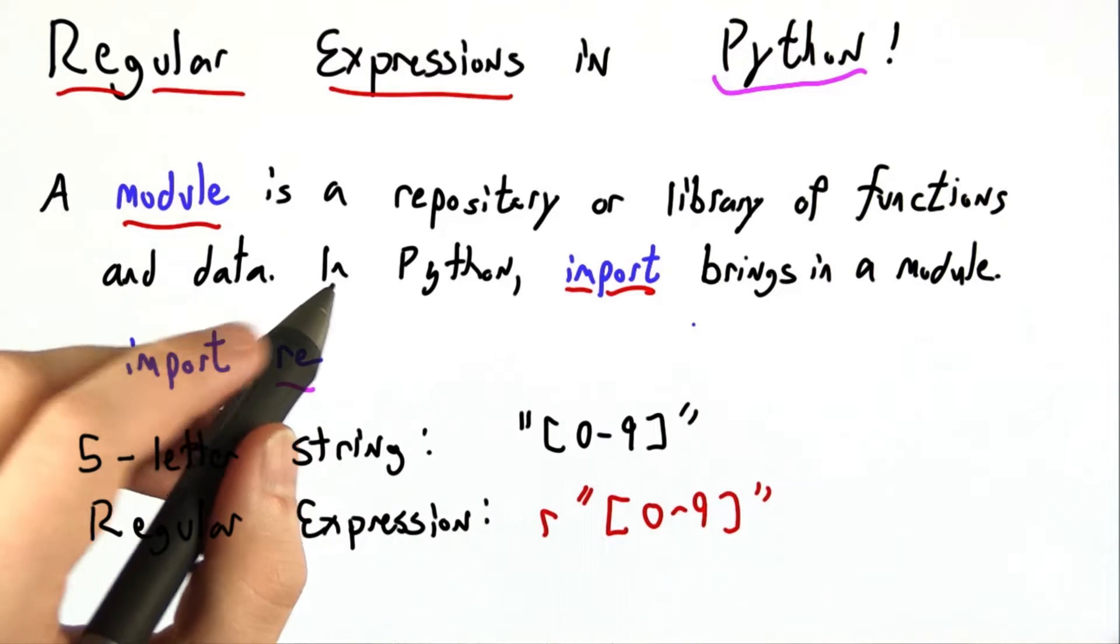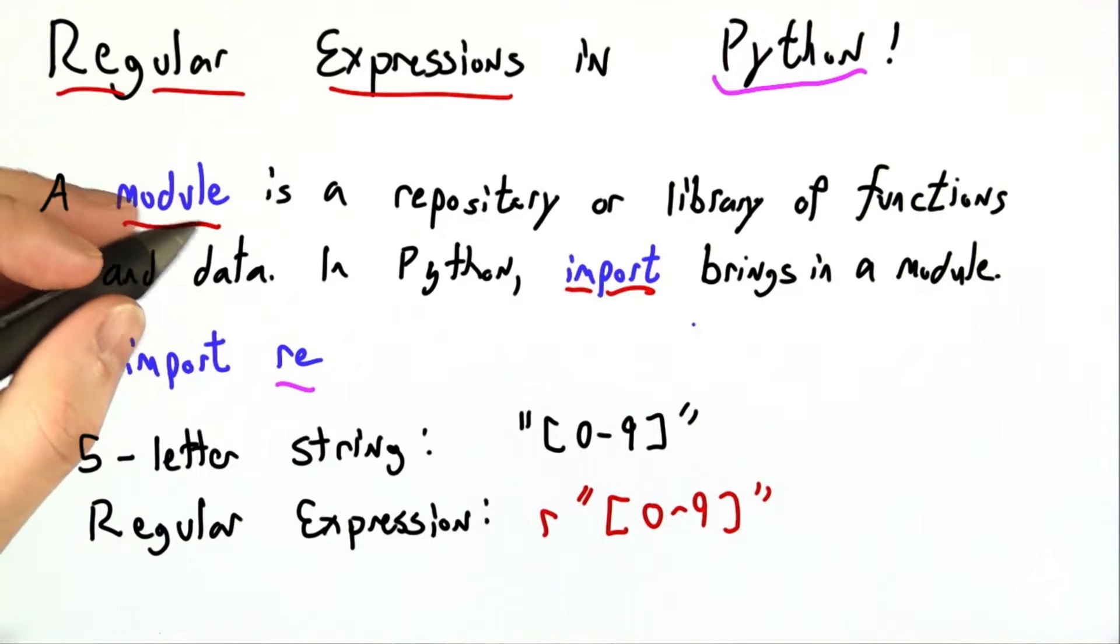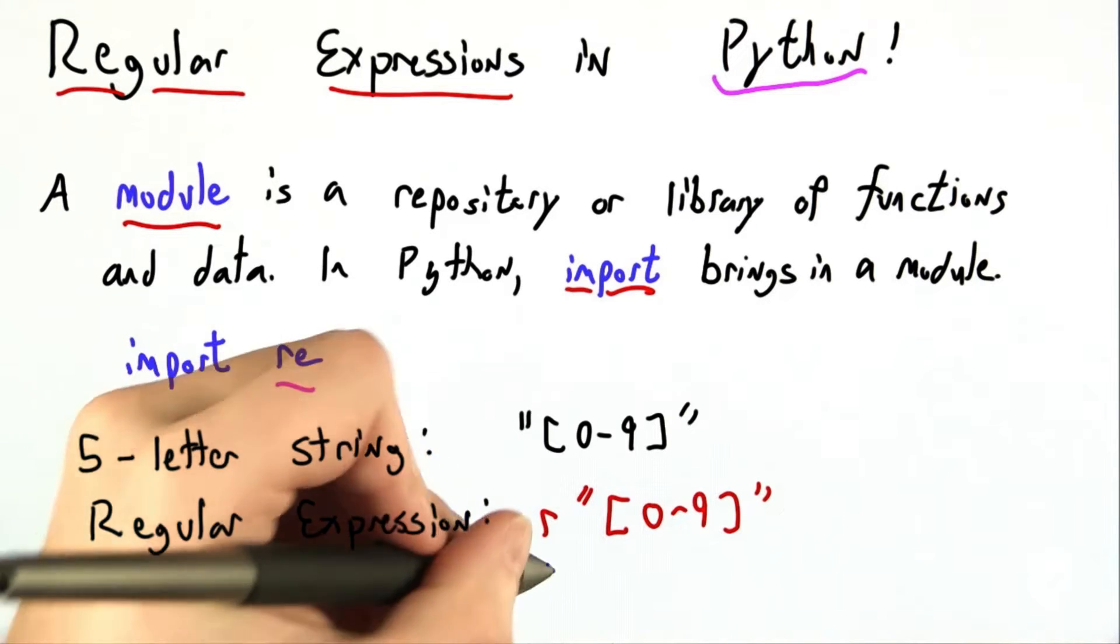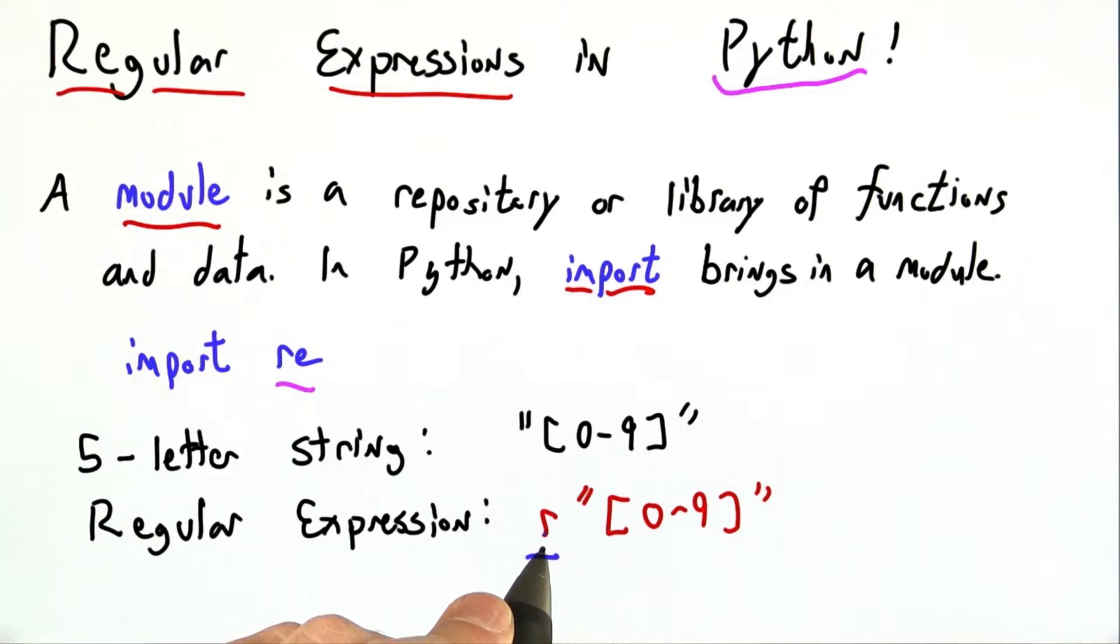If we're going to write down regular expressions in Python, we need to know what they look like. Python regular expressions look just like strings. They start with double quotes or single quotes and they have contents. Except that to separate regular expressions from strings, regular expressions begin with a lowercase r outside of the double quotes.